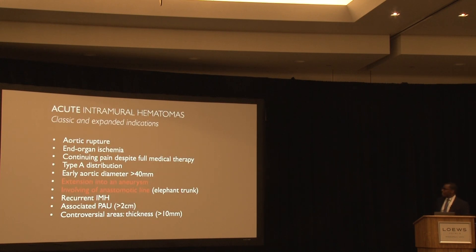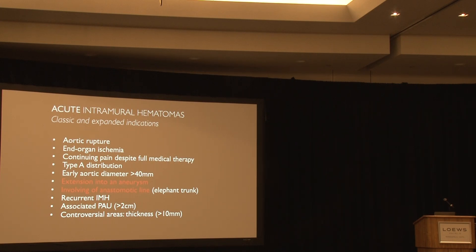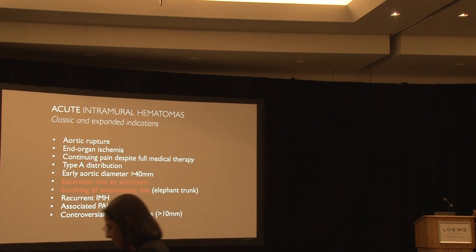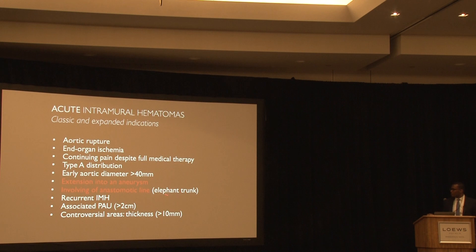Patients with intramural hematoma can be very deceiving and difficult to follow. If someone has bruising within the aortic wall and you treat them with medications, they can actually heal — that's true. But if they have rupture, ischemic end-organ damage, persistent pain, or the hematoma is close to the heart (Type A), we call the cardiothoracic surgeons. If the aorta is greater than 40 millimeters, there's expansion, or a pre-existing aneurysm with an overlying hematoma, those patients should be fixed — waiting on them usually doesn't go well.